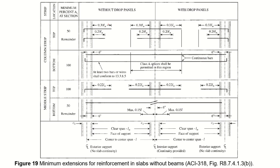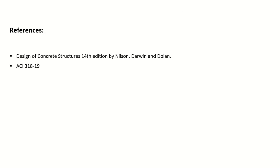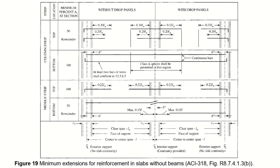The bar length details are shown for the column strip long direction, middle strip long direction, column strip short direction, and middle strip short direction, which can be compared with the tables for verification. The final figure shows required development lengths for various cases: without drop panel, with drop panel, at exterior support, at interior support, for positive and negative reinforcement. That concludes this lecture on analyzing and designing a two-way flat plate using the direct design method.